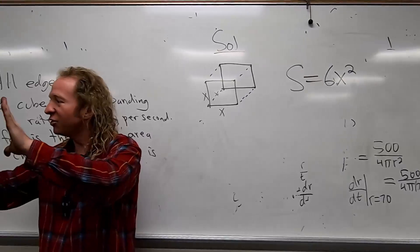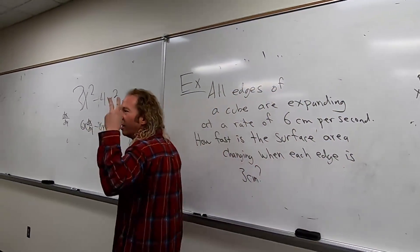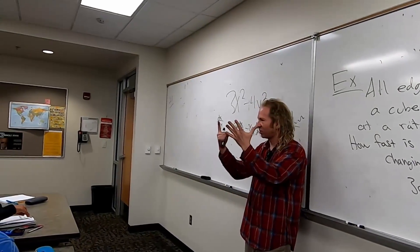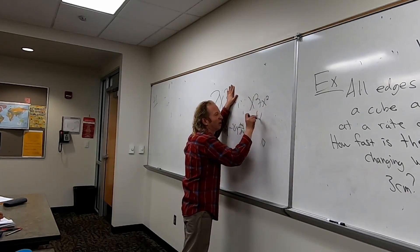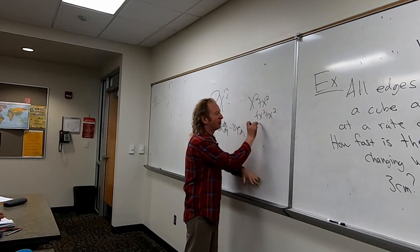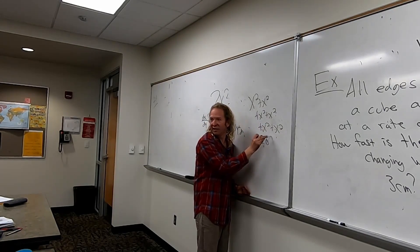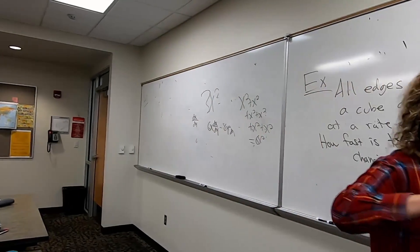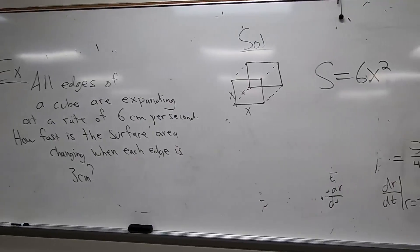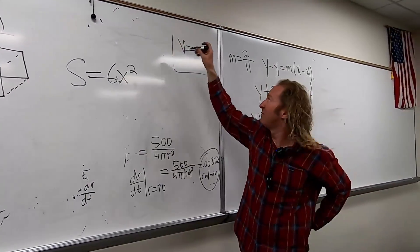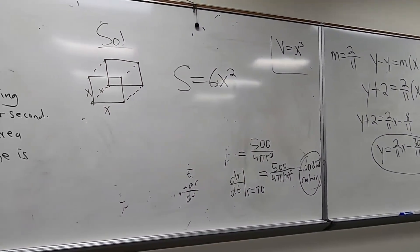That's the surface area: six X squared, because it's X squared six times. What if it was volume? Volume is length times width times height, but each one of those is the same, so it would just be X times X times X — X cubed.